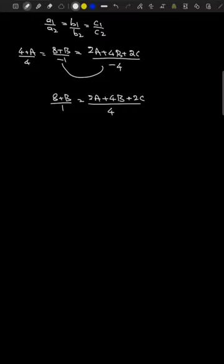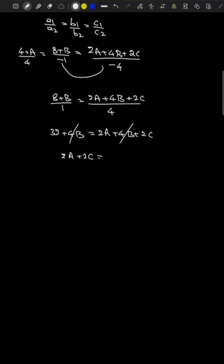Cross-multiplying: 32 + 4b = 2a + 4b + 2c. The 4b terms cancel, giving 2a + 2c = 32, so a + c = 16. Looking at the options, the answer is option A.